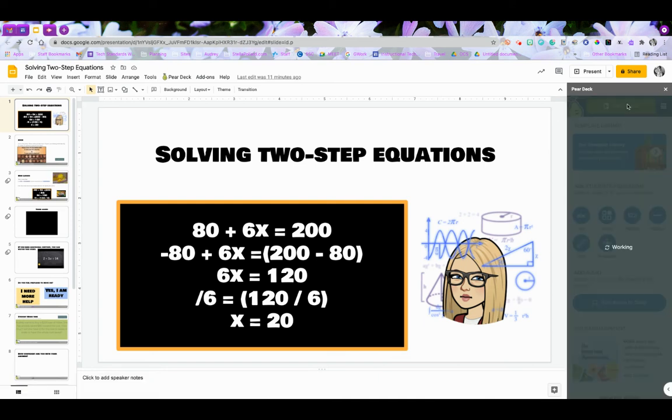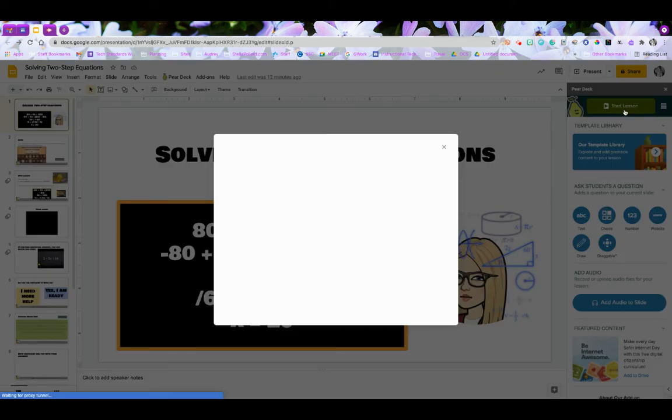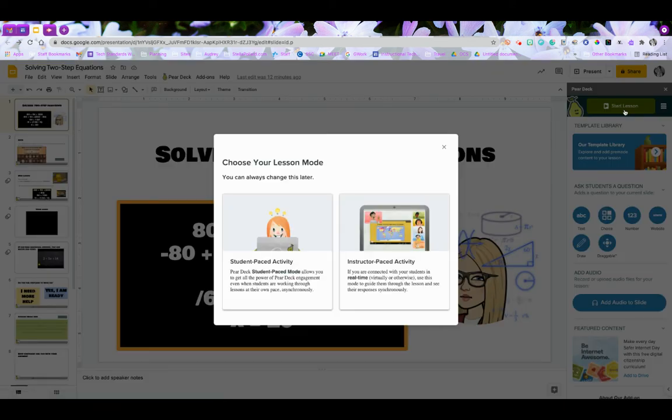You have the start lesson button and that's where you're going to click. Once you click that, you're going to realize that you have two different modes: the student paced activity and the instructor paced activity.